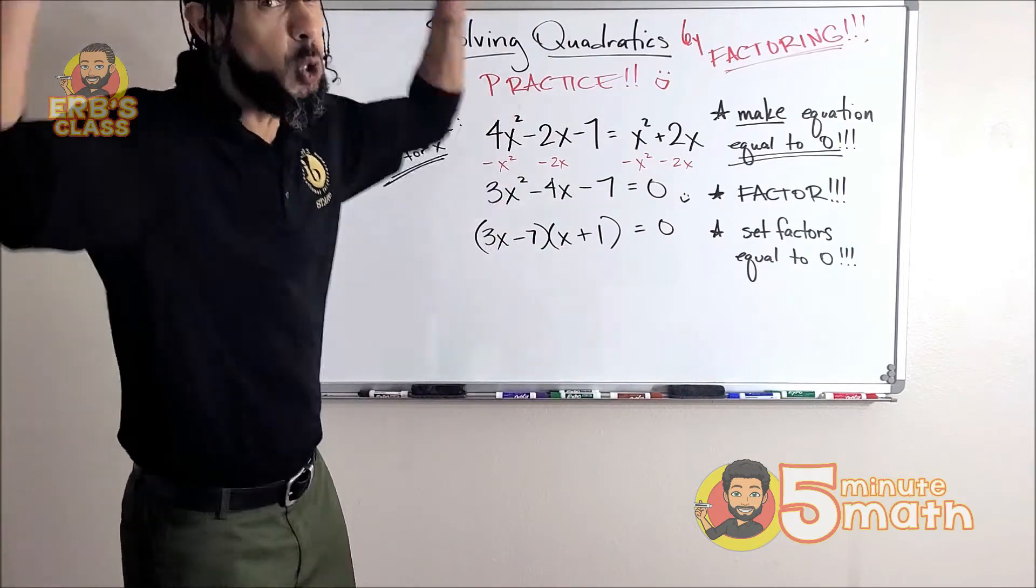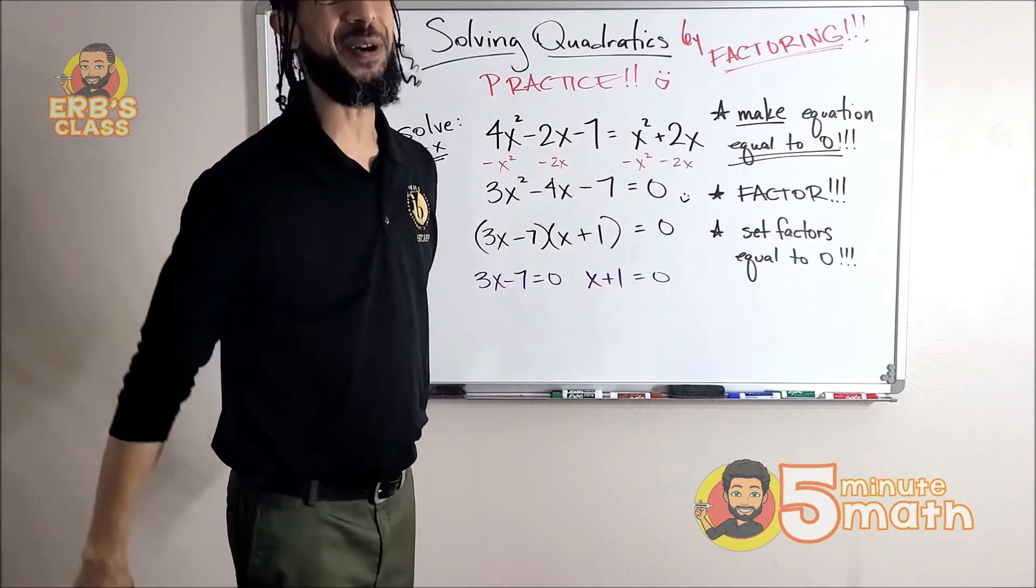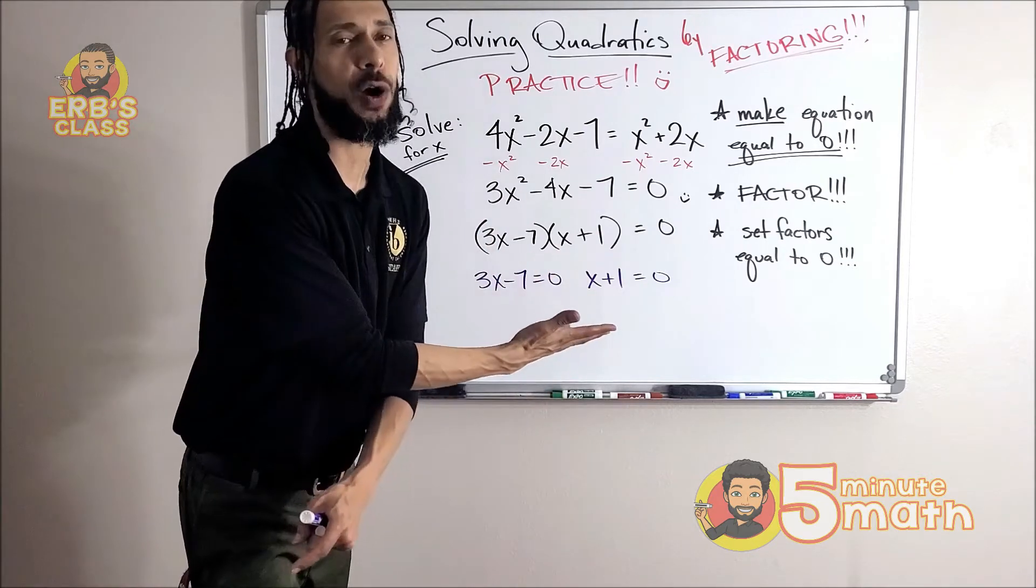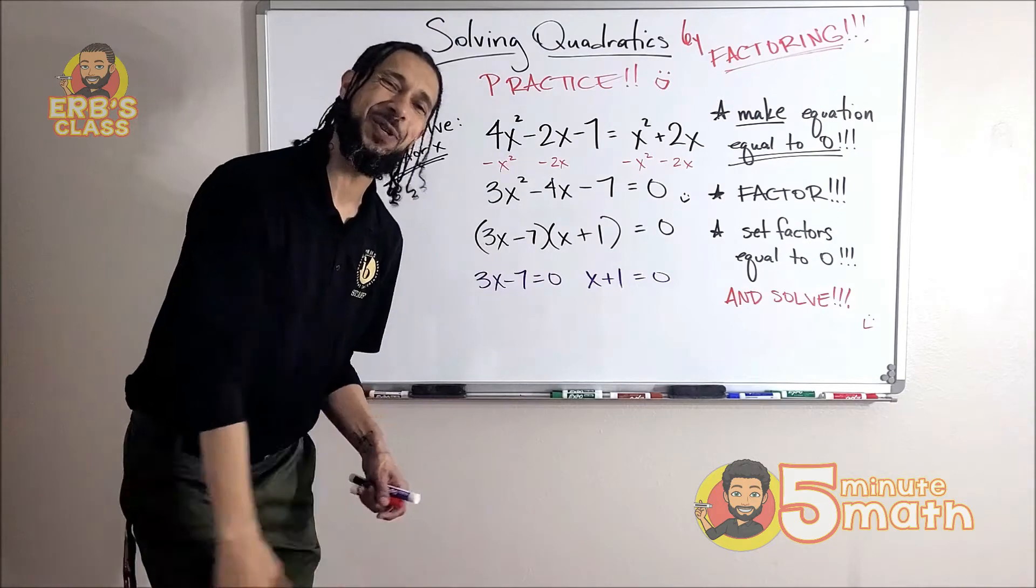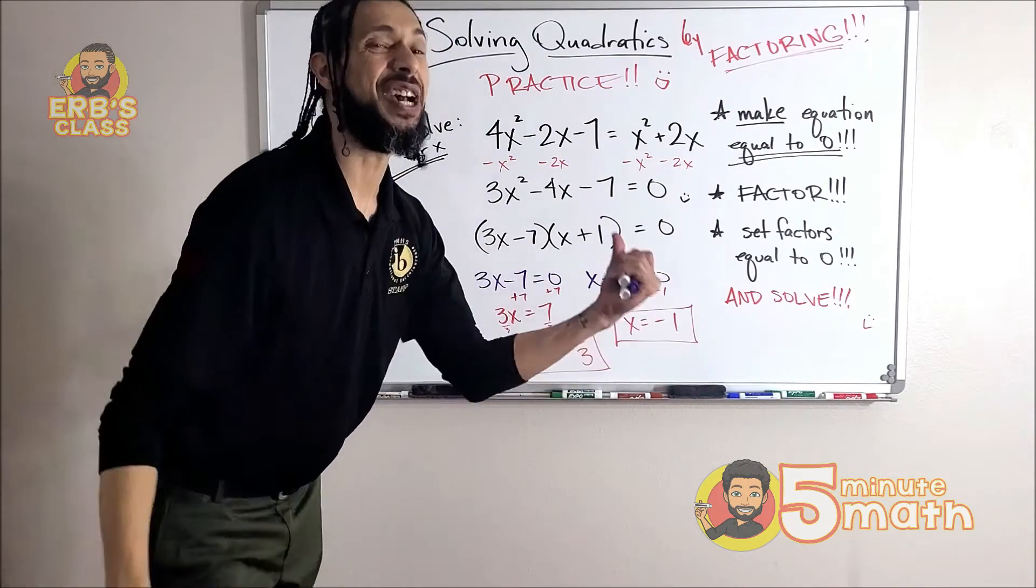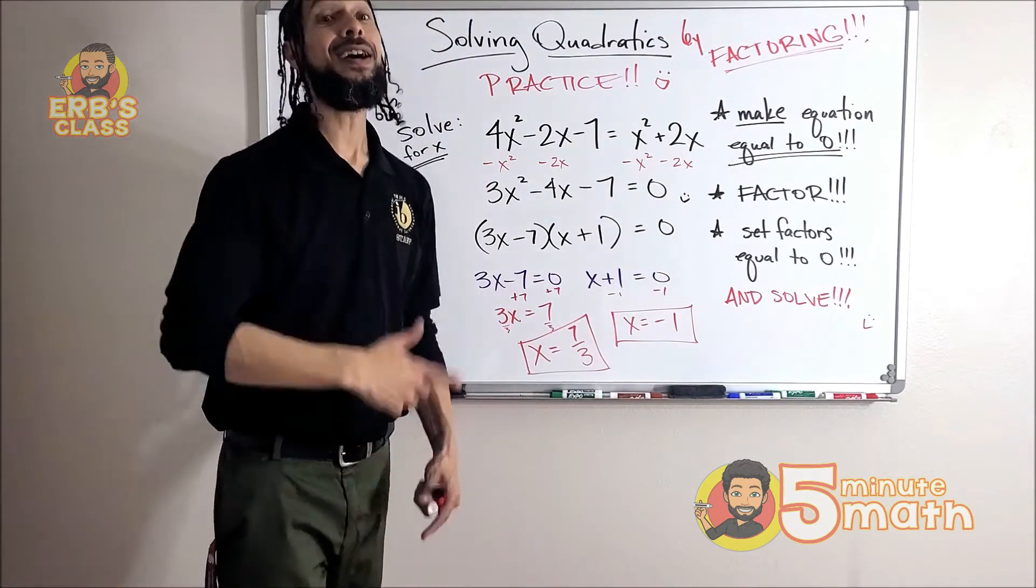And of course I set the factors equal to zero. Of course, I mean of course you gotta solve those. I guess I probably should have added that here. And solve, like this. Yeah, just like that. Next one.